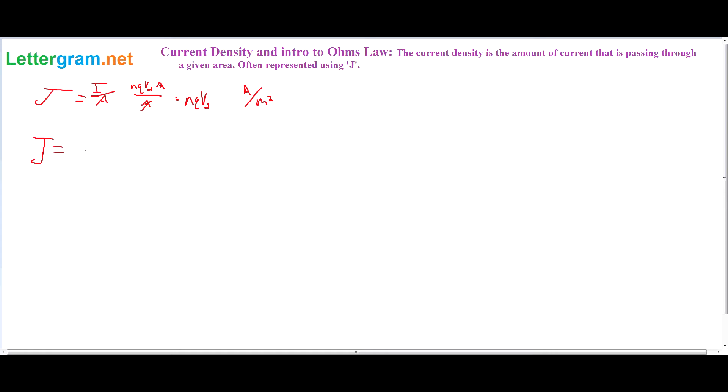So here's this. The current density is also equal to some constant, which is, I forget what that symbol is, sigma, times the electric field.